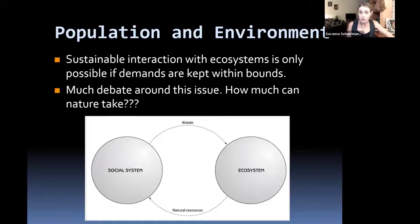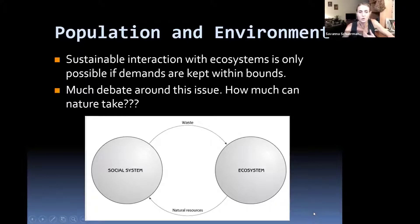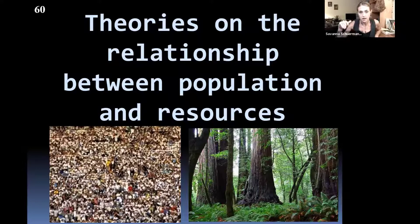Sustainable interaction with ecosystems is only possible if demands are kept within bounds. There's a lot of debate over this — how much can the earth, the environment, take while still supporting human life as we know it? This is a new section of the course we're starting: what is the relationship between population and resources, and how have people discussed and argued about this?